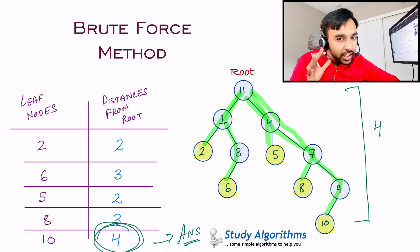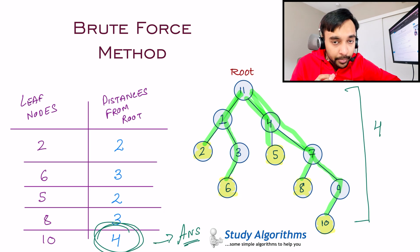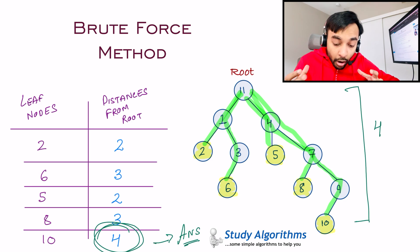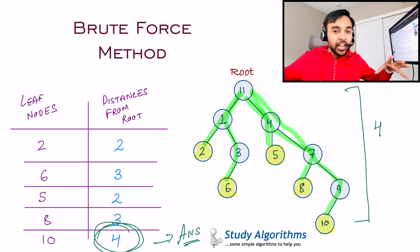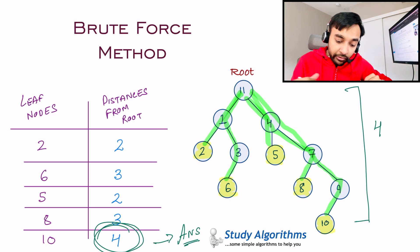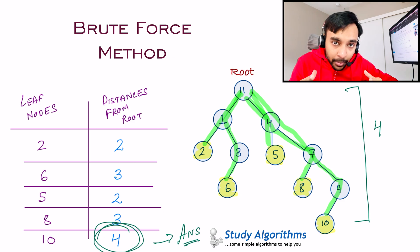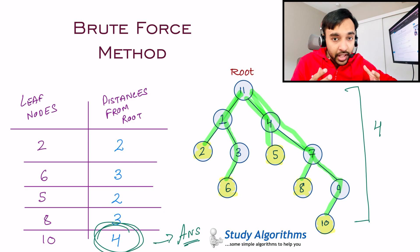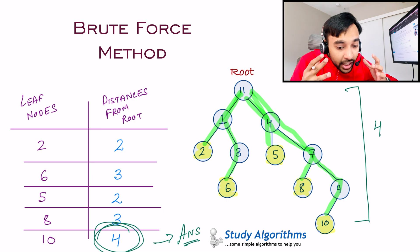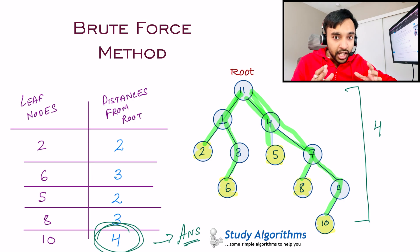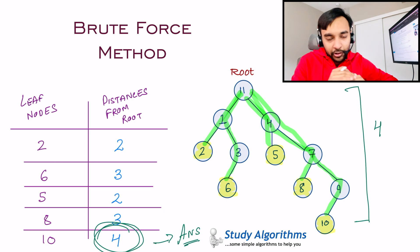This method works and will give you a correct answer every time. But can you see the problem with this approach? What happens if your tree is very huge and you have a lot of leaf nodes? Will you go on to calculate the distance between each of them? That would be very hectic and would take a lot of time. So try to think of an efficient approach.